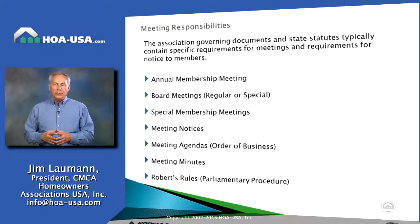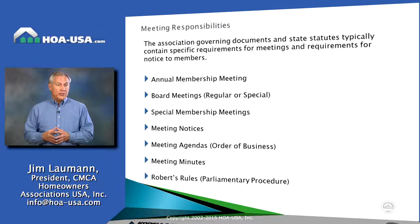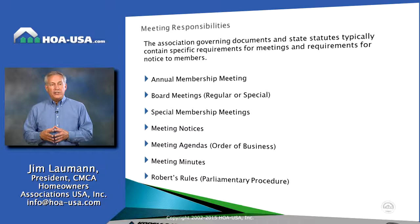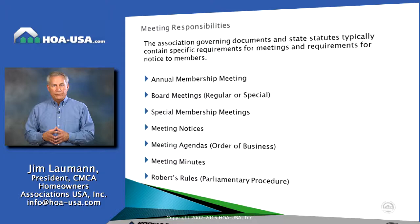The association has a responsibility to conduct certain meetings and provide adequate notice. These meetings include the annual membership meeting, which is probably the most important, board meetings whether regular or special, and special called meetings of the entire membership. The association has a responsibility for proper notice of these meetings, in many cases preparing agendas that are approved ahead of time, and for maintaining the minutes of the meetings — all consistent with Robert's Rules of Order.